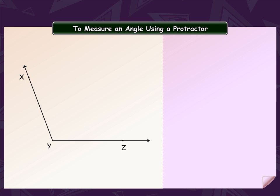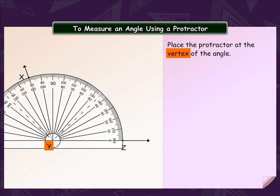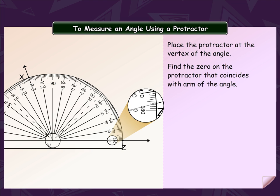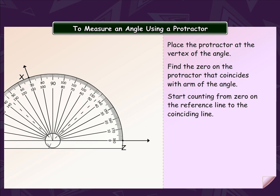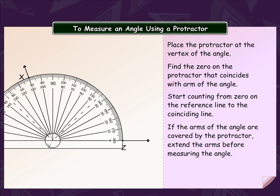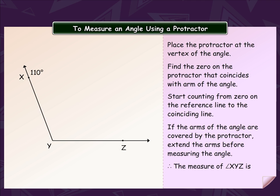Let's now see how to use a protractor to measure an angle. Place the protractor at the vertex of the angle, point Y. Find the zero on the protractor that coincides with the arm of the angle. This is the zero that lies on ray YZ. Start counting from zero on the reference line to the coinciding line. If the arms of the angle are covered by the protractor, extend the arms before measuring the angle. Therefore, the measure of angle XYZ is 110 degrees.